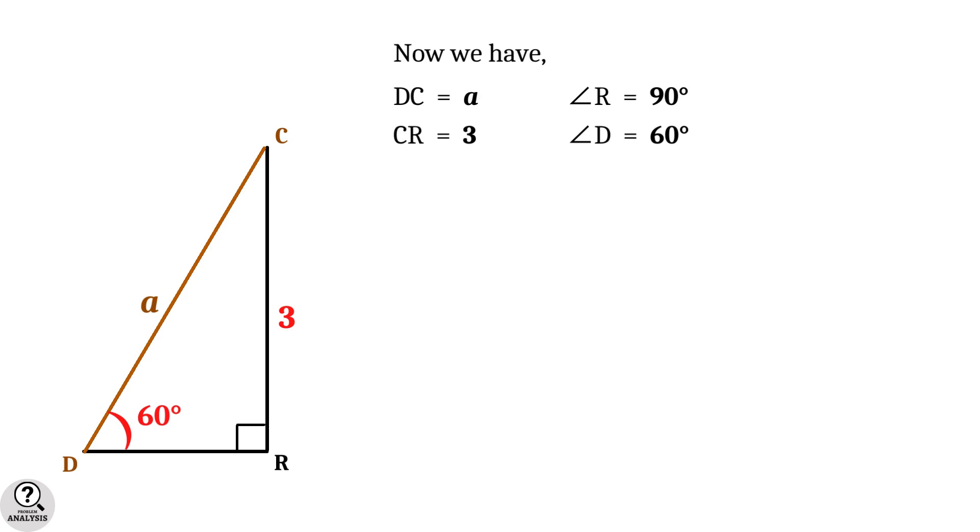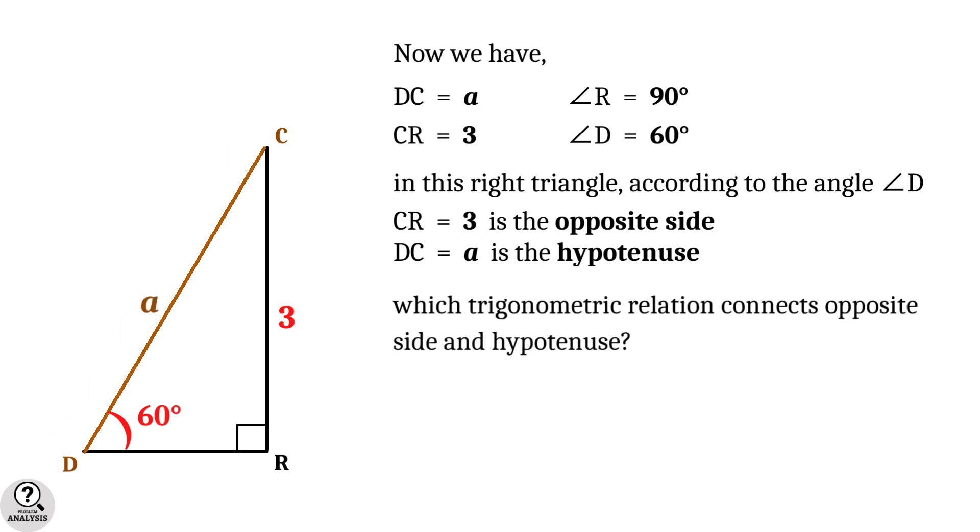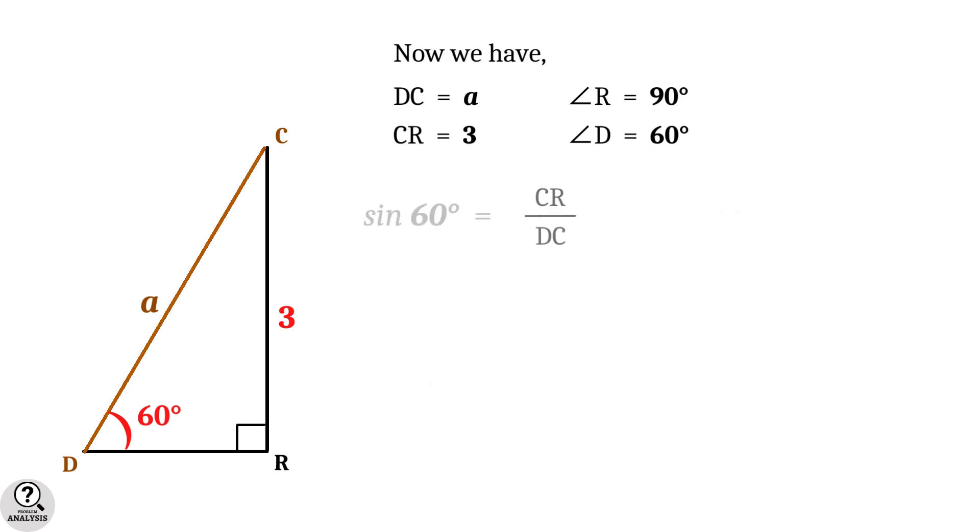and angle D = 60°. In this right triangle, according to the angle D, CR = 3 is the opposite side and DC = a is the hypotenuse. Then which trigonometric relation connects the opposite side and hypotenuse? It is the sine function, which equals opposite side by hypotenuse.